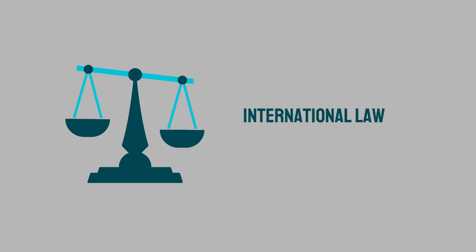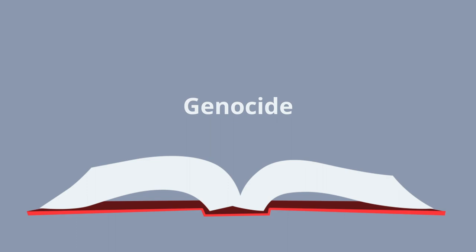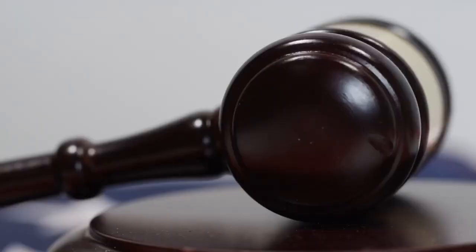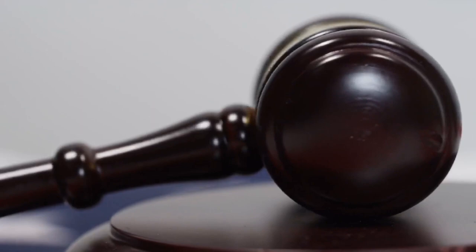The first problem we have with international law of the time is that it didn't even know the word genocide. The word was only introduced to the world in 1944 by Raphael Lemkin, who also invented the word. But it only entered international law after World War II through the Genocide Convention. So international law at the time didn't know the offense of committing genocide, and so that offense just didn't exist.